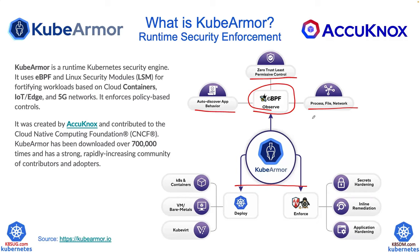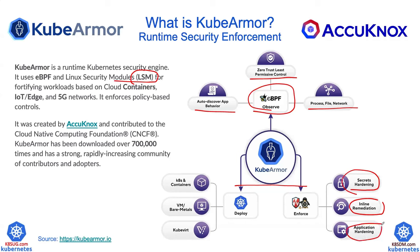Once you understand the situation and how to enforce it — say you just want three processes running, access to two files, and two network ports — with the enforcement, it leverages the LSM, which is part of the Linux security modules, to further restrict actions. You can use it to do secrets hardening, inline remediation or prevention, and application hardening.